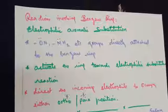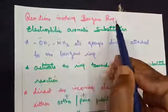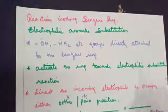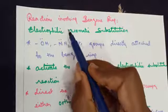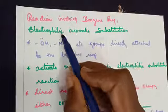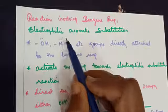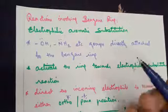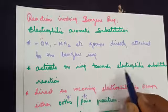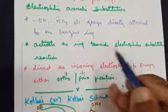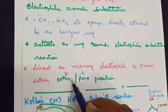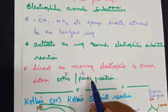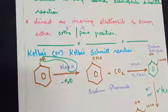Good wishes, dear students. The concept you will be learning in today's class is reactions involving the benzene ring, also known as electrophilic aromatic substitution. Electrophile stands for electron-loving group. Alcohols undergo nucleophilic substitution — they are nucleus-loving groups. If the benzene ring has a OH group or a NH2 group, they activate the ring towards electrophilic substitution, directing incoming electrophiles to ortho or para positions, not to the meta position.